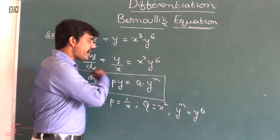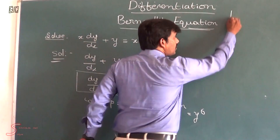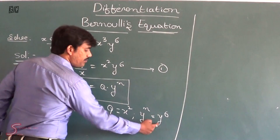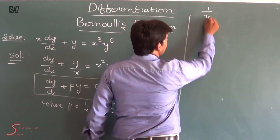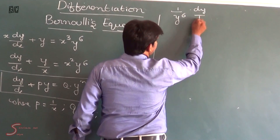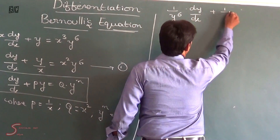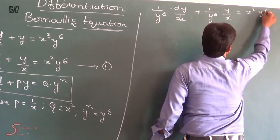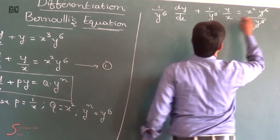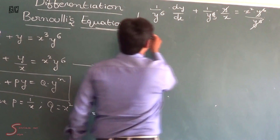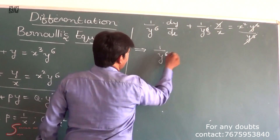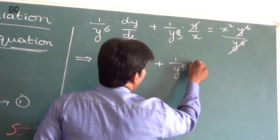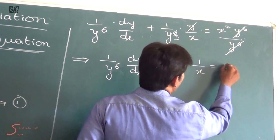After identifying the form, we divide the entire equation by y⁶. So: (1/y⁶) · (dy/dx) + (1/y⁶) · y · (1/x) = x² · y⁶/y⁶. The y⁶ terms cancel on the right, giving: (1/y⁶) · (dy/dx) + (1/y⁵) · (1/x) = x².